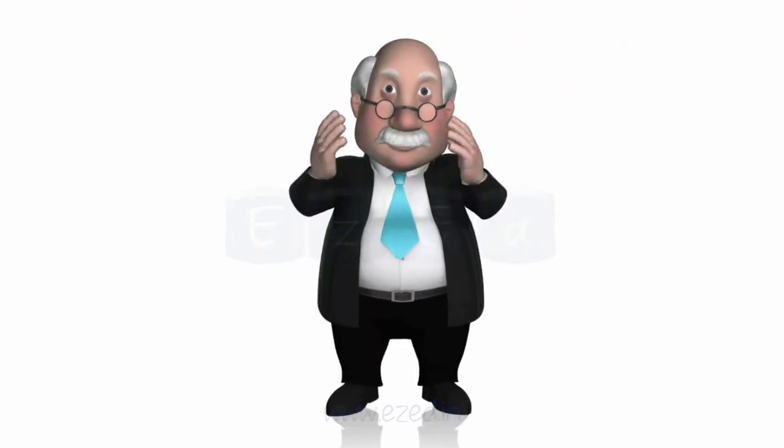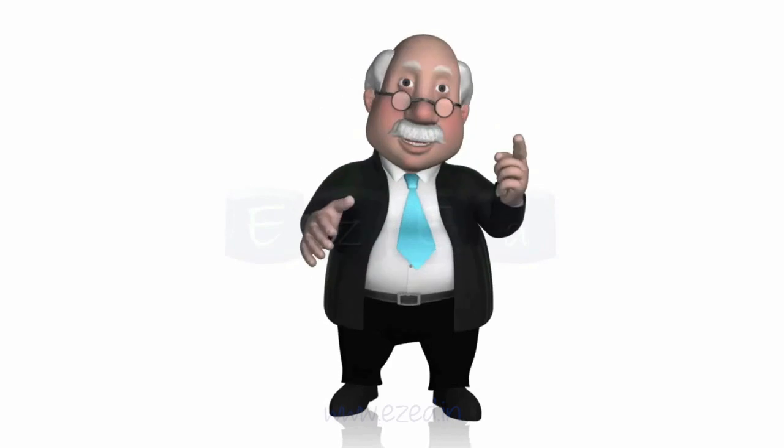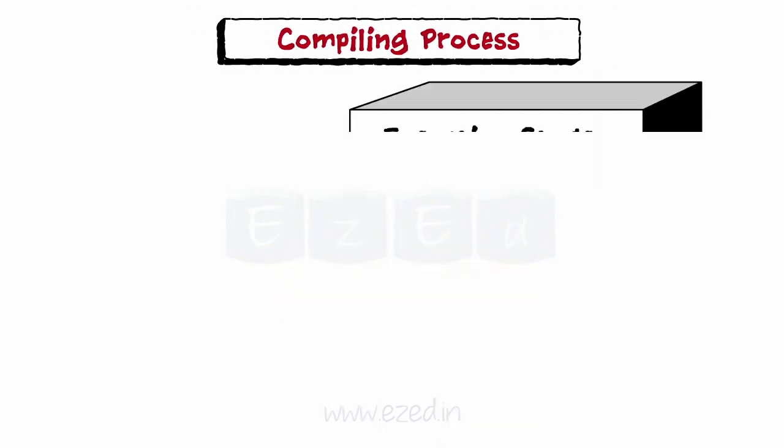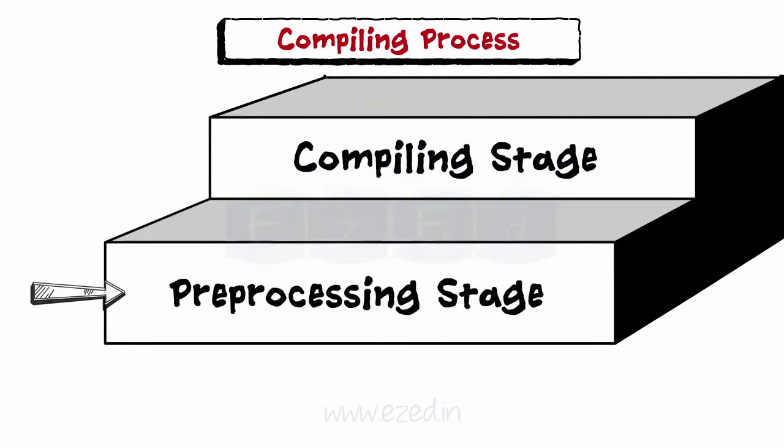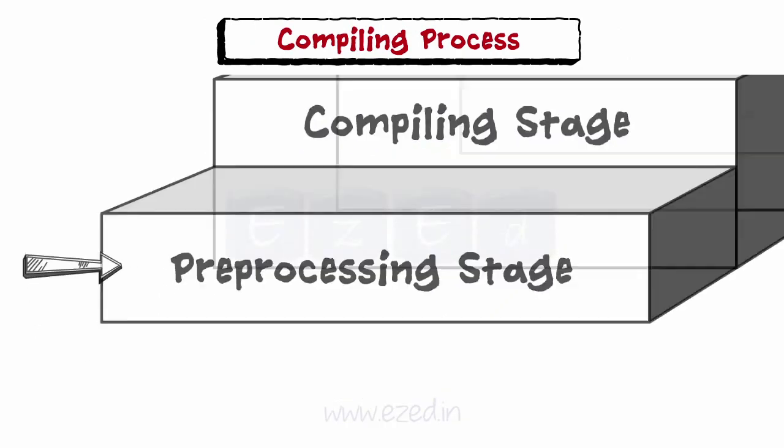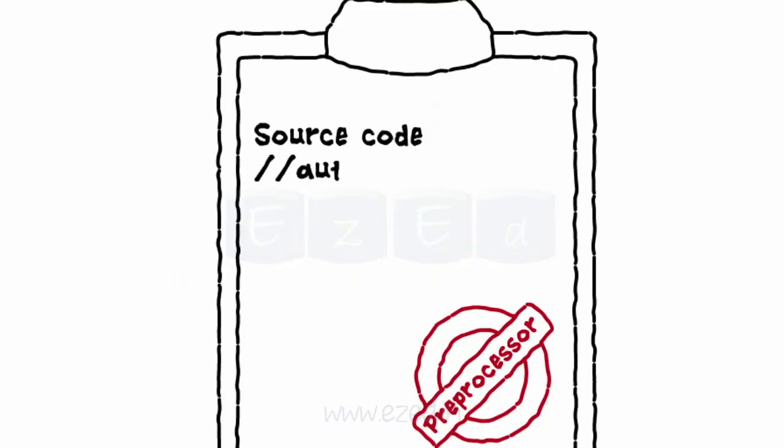Seriously, pay attention. This is important. Let's learn the compiling process in stages. First stage is the preprocessing stage. The preprocessor accepts the source code as input and removes the comments and interprets a special preprocessor directive denoted by hash.